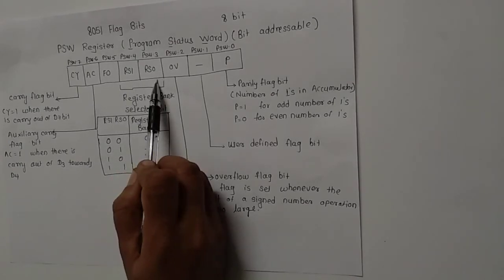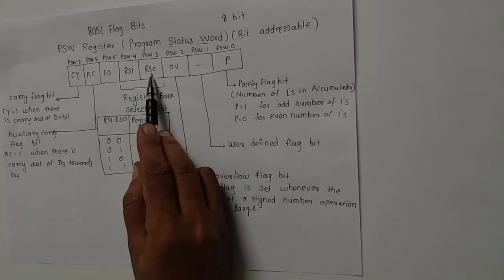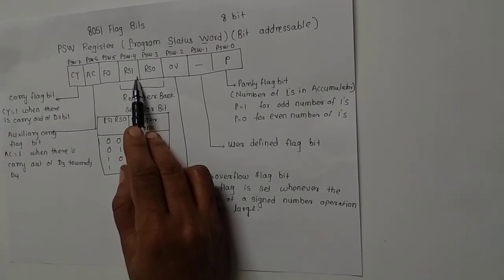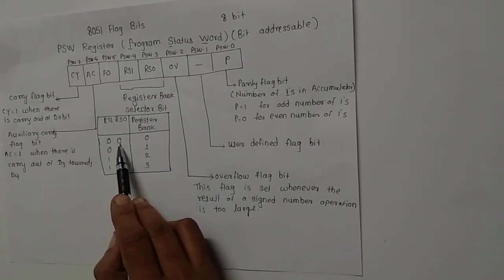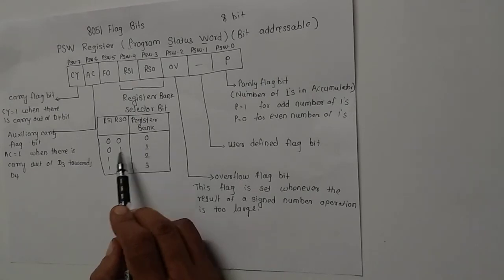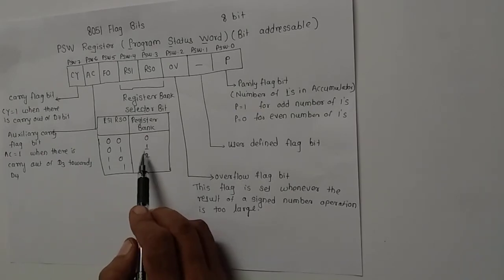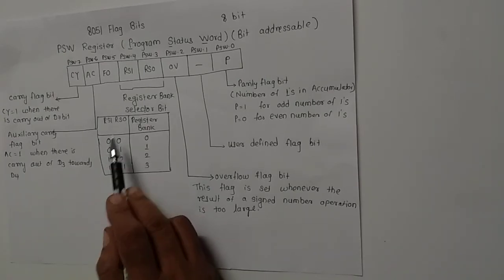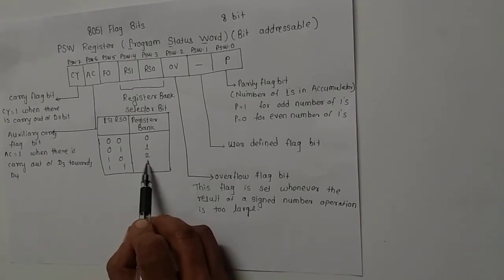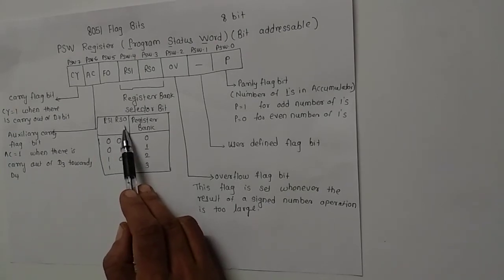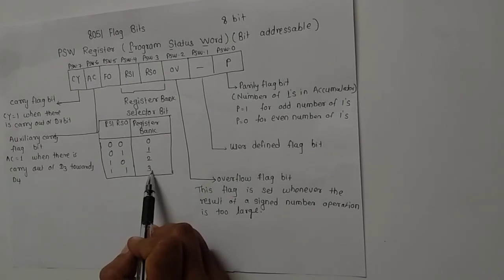They are register select bit number 0 and register select bit number 1. When RS1 and RS0 both are 0, then we have register bank 0 selection. When RS1 is 0 and RS0 is 1, then register bank 1 will get selected. When RS1 is 1 and RS0 is 0, register bank 2 is selected. When RS1 and RS0 both are 1, then register bank 3 is selected.